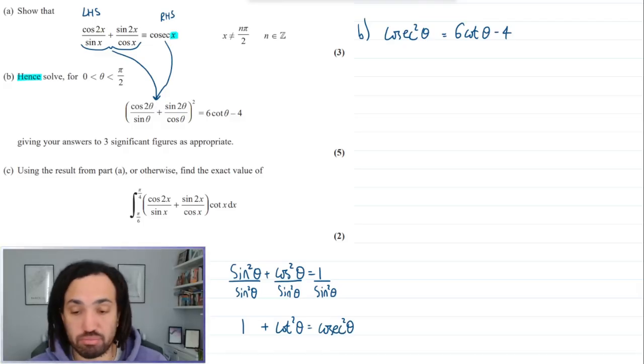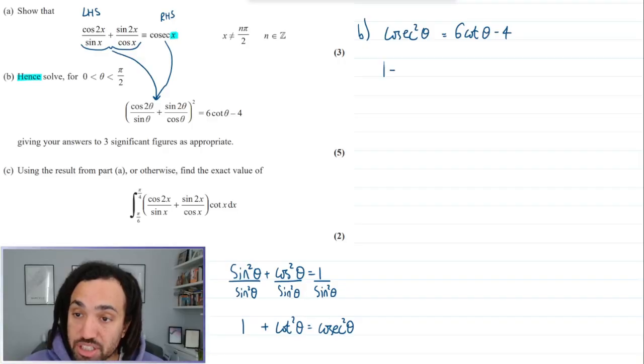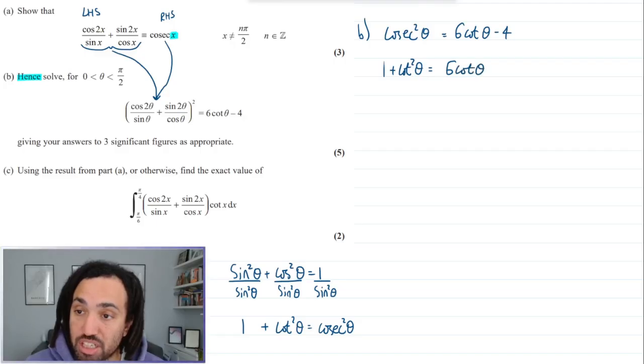You can also divide through by cos squared as well and that gives you tan squared plus 1 is equal to sec squared. So let's swap this out then. This becomes 1 plus cot squared theta is equal to 6 cot theta minus 4.